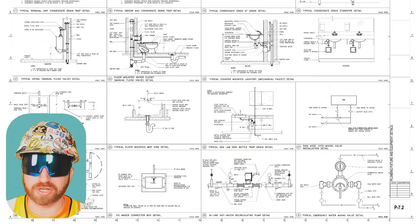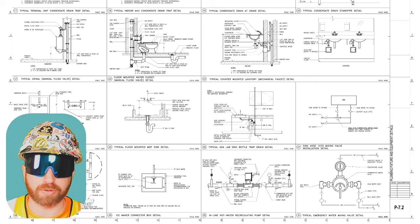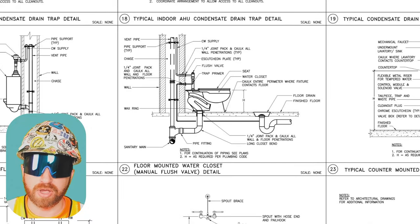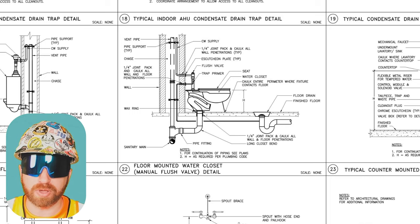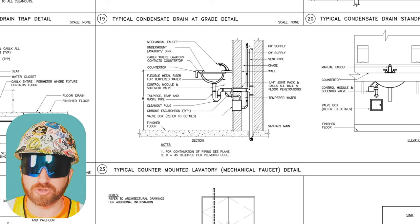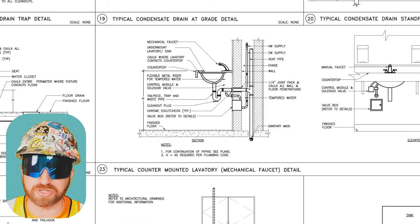Moving on to our next page, P-7.2, which is our plumbing fixture and equipment detail page. Let's take a look at detail 22. We see exactly how a water closet or a toilet would be hooked up in this overall plumbing system. Right next to that is detail 23, which shows our lavatory or sink details in a similar fashion.